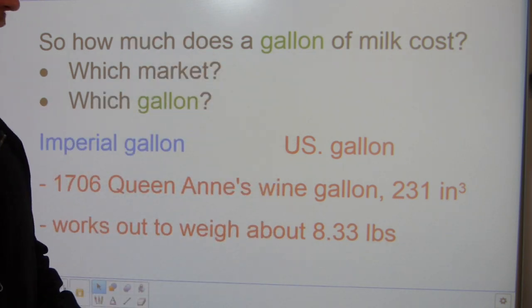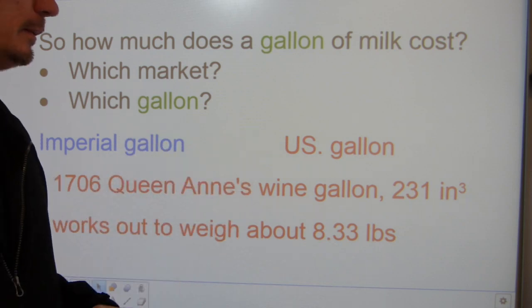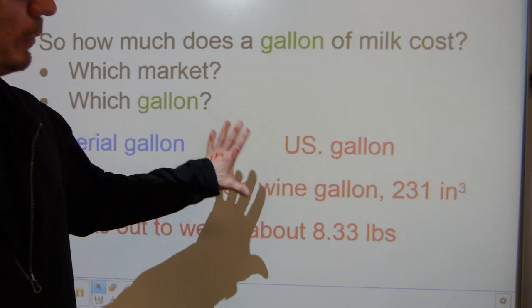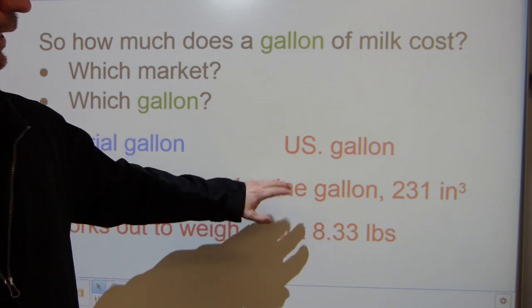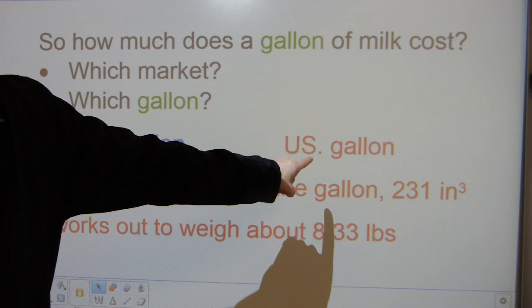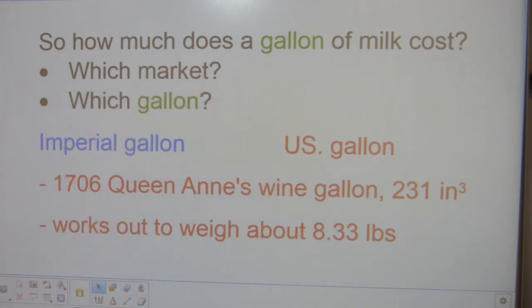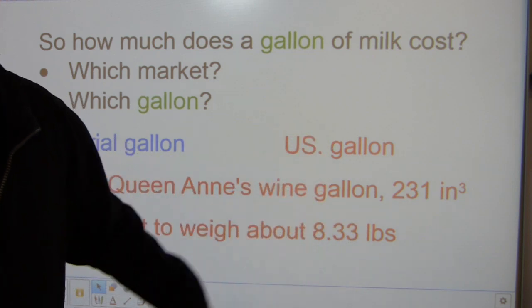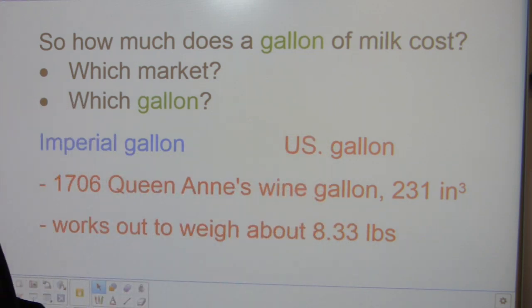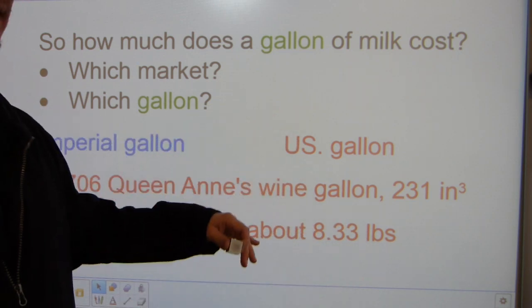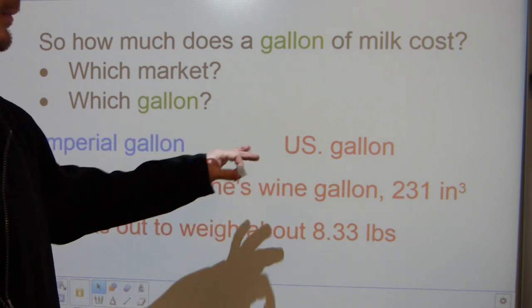Queen Anne's order number five in 1706 made this wine gallon into the official gallon of all colonies. Everybody just had wine gallon, it was called the gallon. Because the Americans separated from the British Empire later on, this gallon got renamed the US gallon. That's what it's called today.